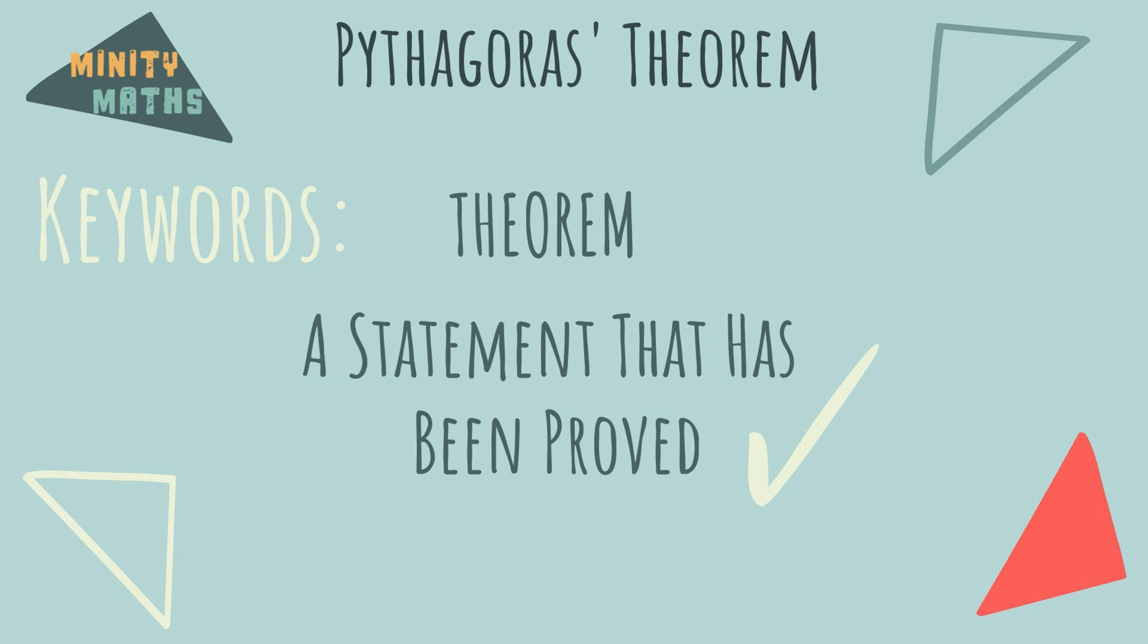To do this, we need to know a little bit about these triangles. Firstly, the term right-angled triangle means that one of the interior angles within the triangle is a 90-degree angle.